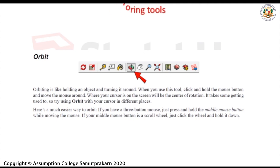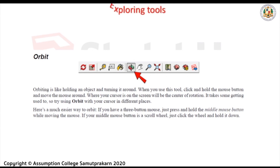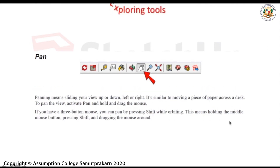The first tool we're going to explore is the Orbit Tool. Orbiting is like holding an object and turning it around. When you use this tool, click and hold the mouse button and move the mouse around — where your cursor is on the screen will be the center of rotation. It takes some getting used to, so try using Orbit with your cursor in different places. If you have a 3-button mouse, just press and hold the middle mouse button while moving the mouse; if your middle mouse button is a scroll wheel, click the wheel and hold it down.